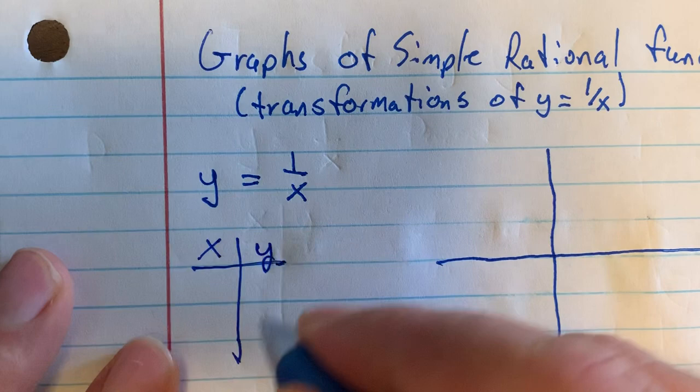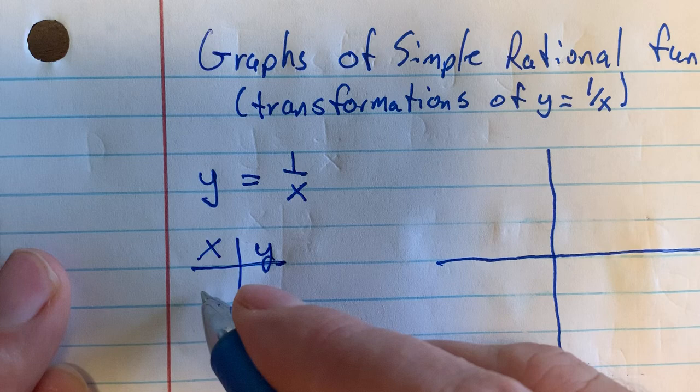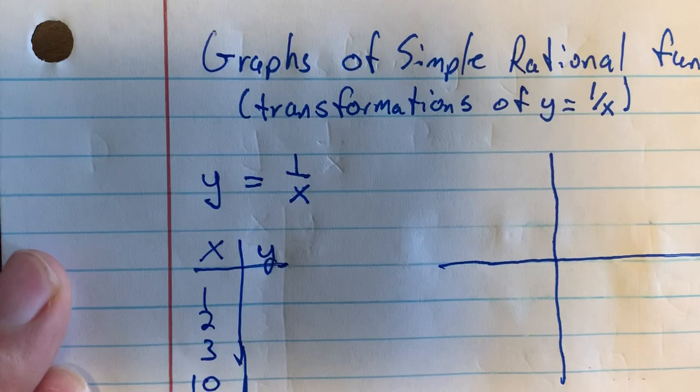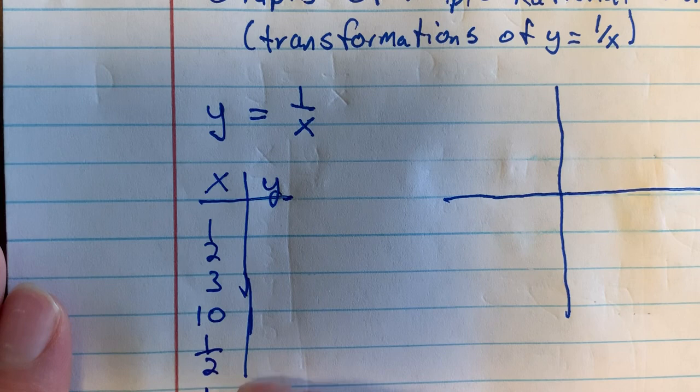I can suggest some x values for you. You can put in x equals 1, 2, 3, and 10 to get a sense of what's going on, see what y values come out, and put those on a graph. You might also want to choose some fractions like 1/2, 1/10, and maybe some negative numbers: negative 1, negative 2, negative 3, negative 1/3. So those are suggested values to plug in for x.